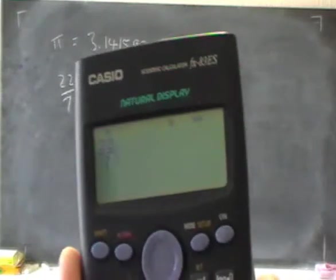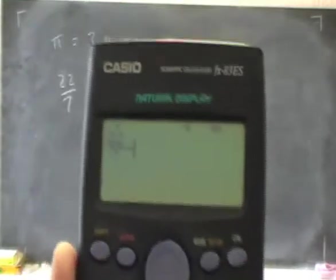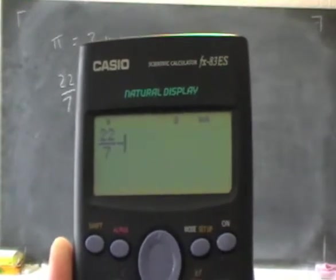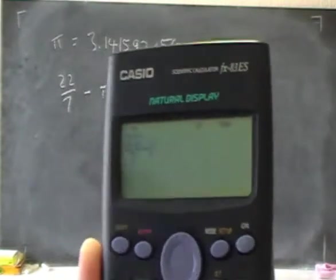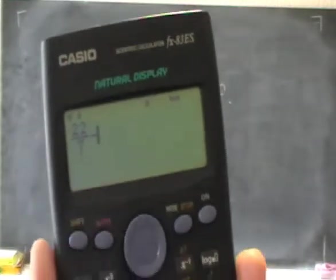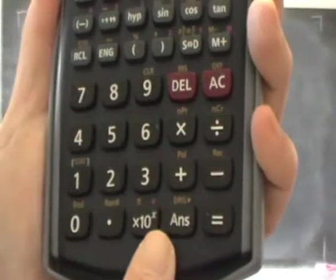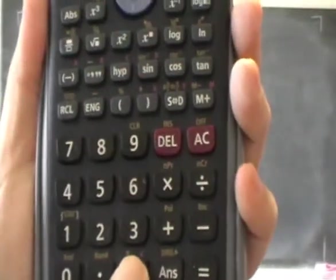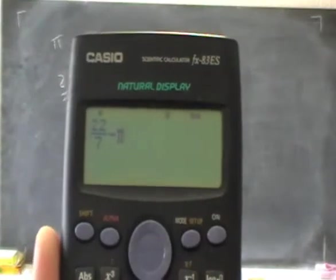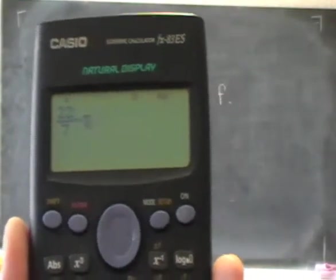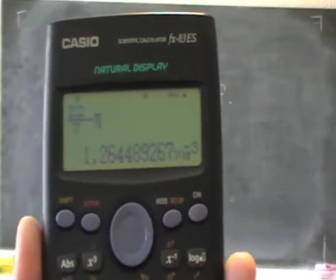And I'm going to minus pi. Now, pi is there. So I do a shift. And pi. So there we are. That's 27. 22 over 7 minus pi. That's the answer.